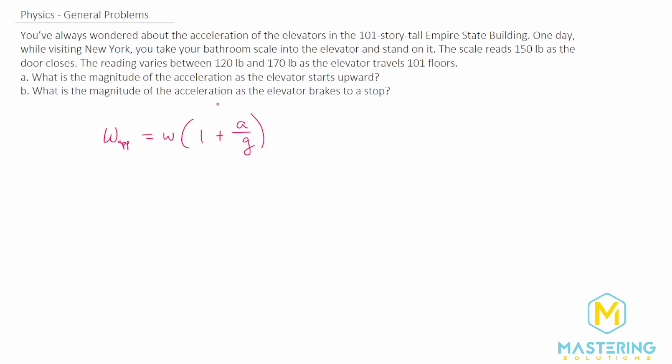In this case, we need to figure out the acceleration. These questions could be much more difficult without this formula, but let's rearrange it for acceleration. First, we'll divide over the weight. So we have weight apparent divided by the actual weight equals one plus acceleration divided by gravity.